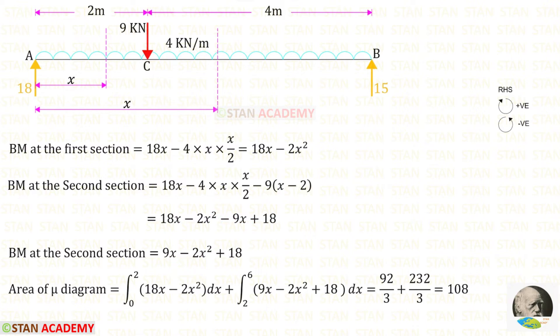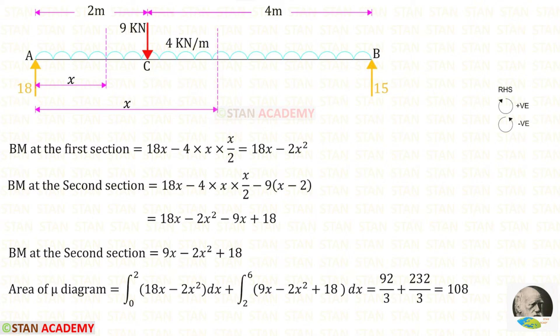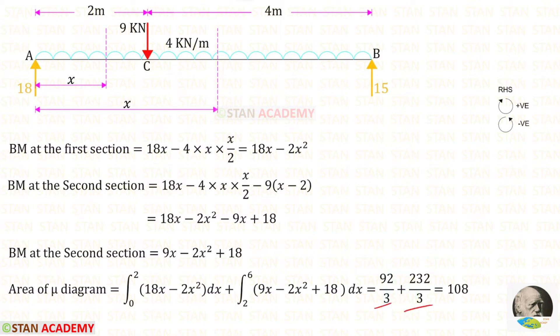Now let us find the area of the mu diagram. For that we have to integrate the moments over each section. For the first section the limit is 0 to 2, and for the second section the limit is 2 to 6. Using a calculator for these two integrations and adding the two values, we get a total area of 108.